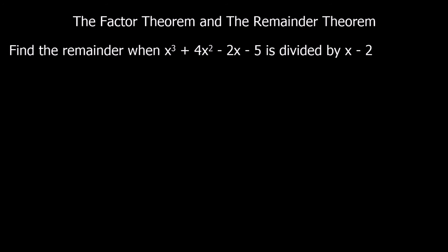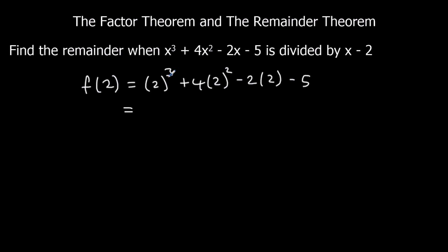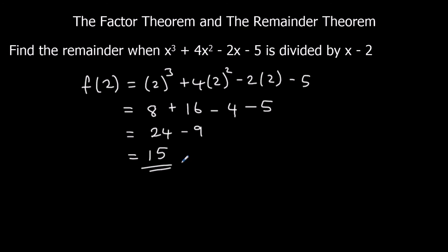Now find the remainder when x cubed plus 4x squared minus 2x minus 5 is divided by x minus 2. Since x minus 2 isn't a factor, we substitute in 2 and find what the answer is rather than expecting 0. Substituting 2: 2 cubed is 8, plus 4 times 4 which is 16, minus 4, minus 5. That's 24 minus 9 which is 15. So the remainder when dividing by x minus 2 is 15.